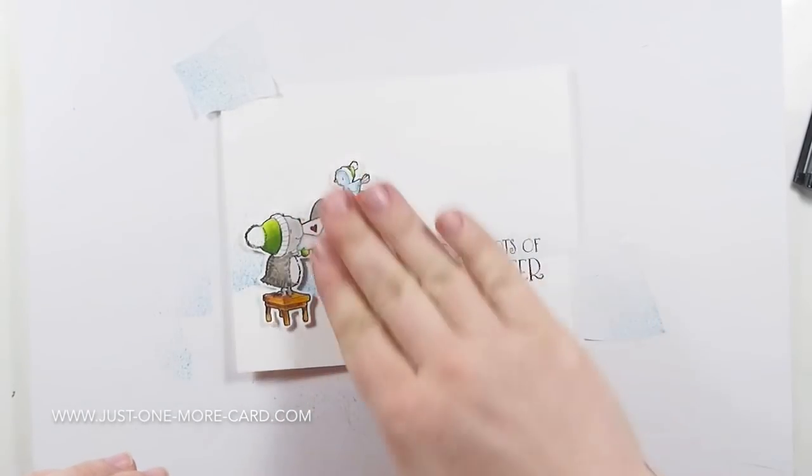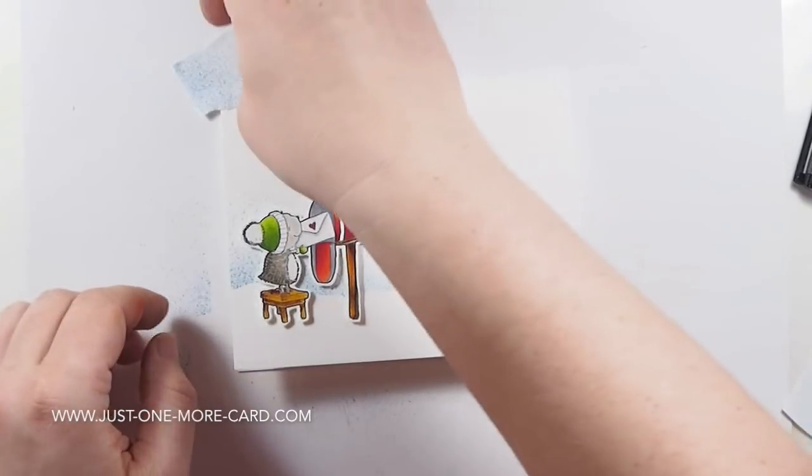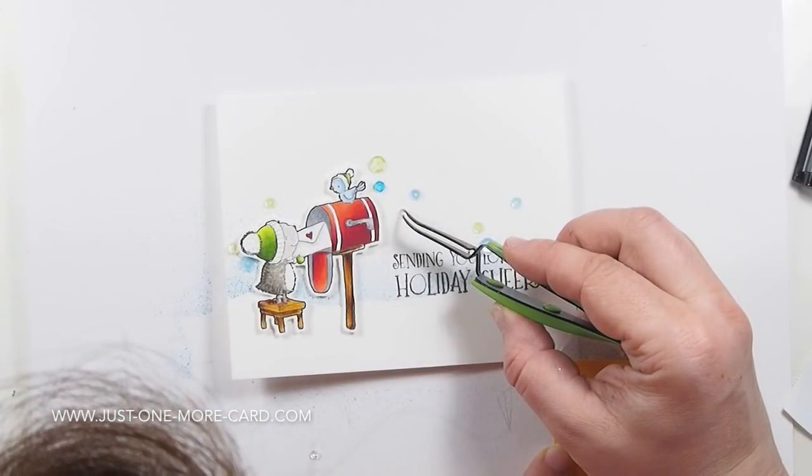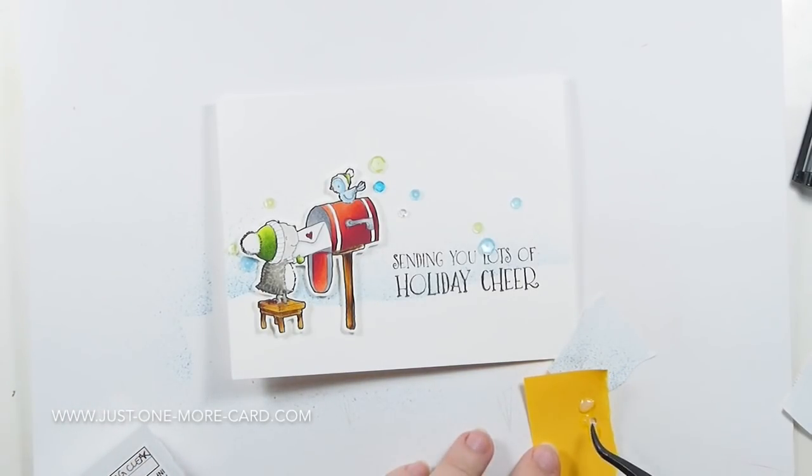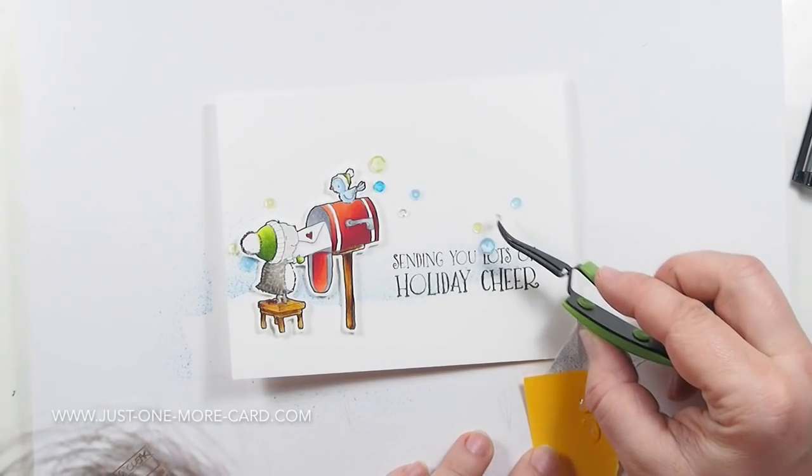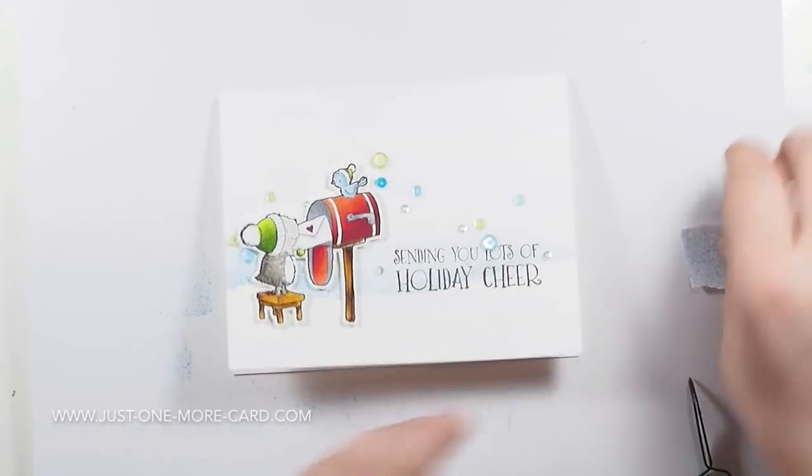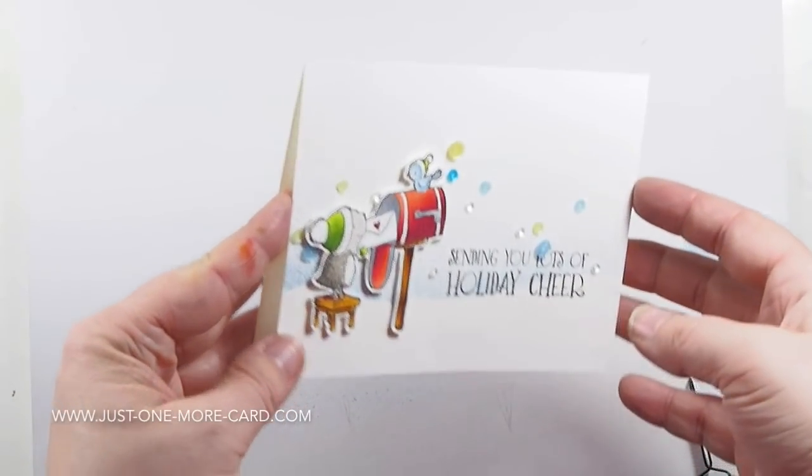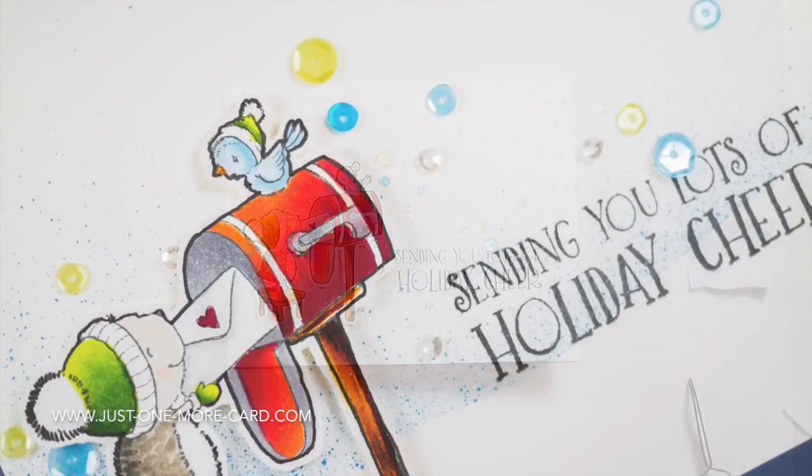There we go. Added some foam tape, and you could stop here. You can leave the card as is. It would be pretty nice. I was close to say perfect, but I don't want to, that sounds kind of weird if I say that about my own project. So what I'm doing here, I put some glossy accents on a piece of scrap paper, picking some of it up with sequins from Pretty Pink Posh, and then just adhering the sequins to the card, because I can add sequins to pretty much everything, actually.